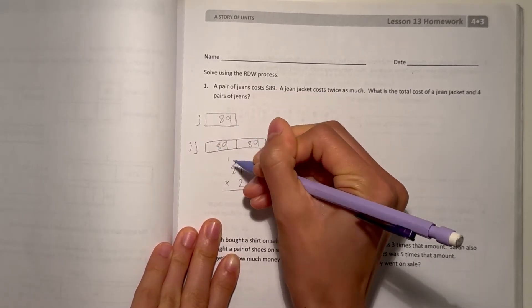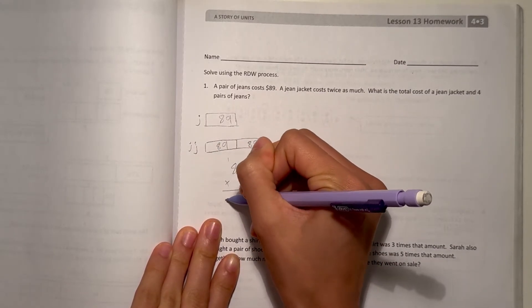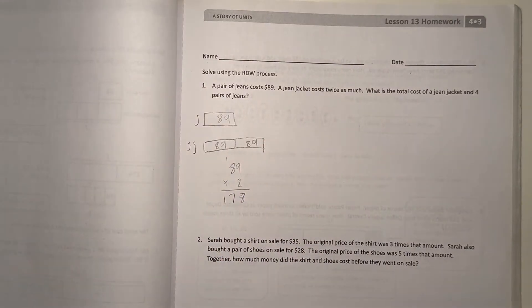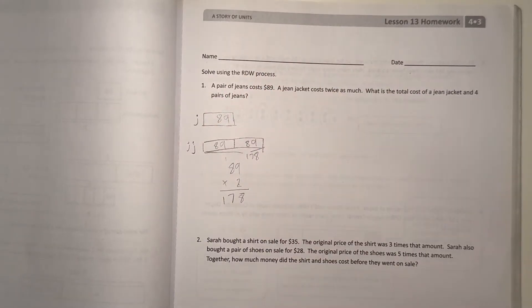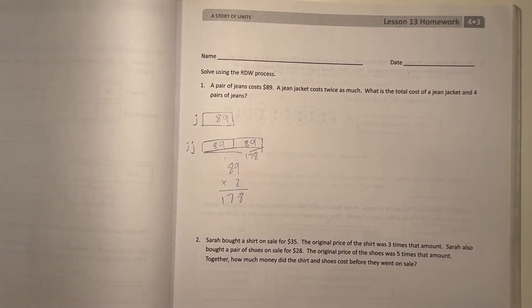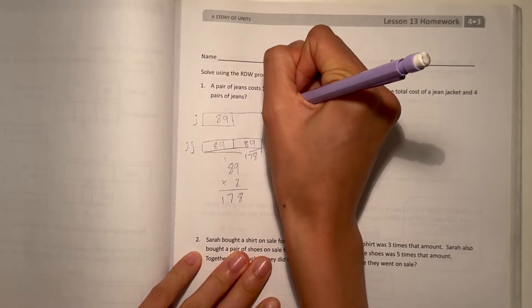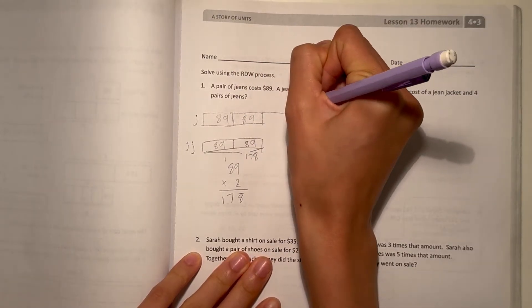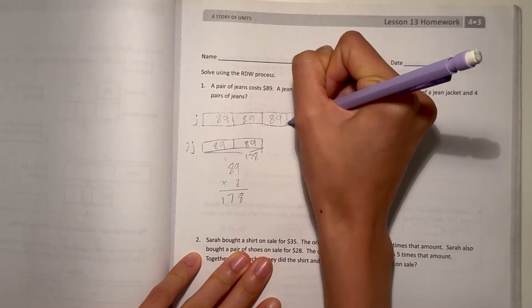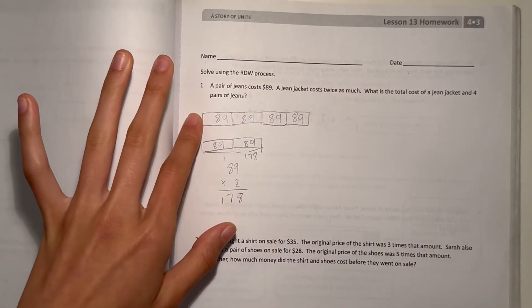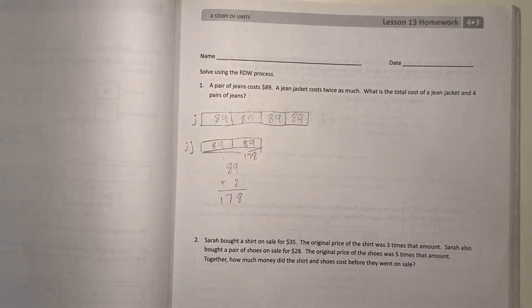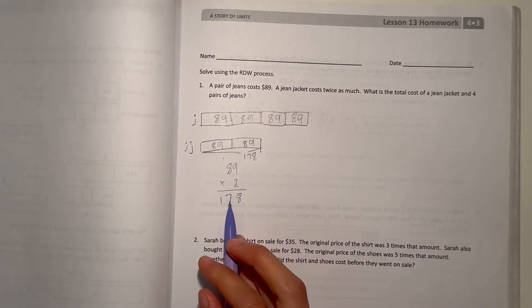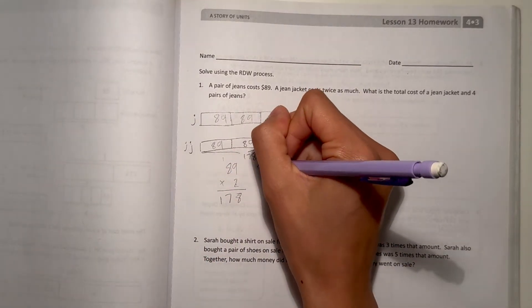So a jean jacket is twice as much as the cost of one pair of jeans. So that's 89 times 2. 9 times 2 is 18. 8 times 2 is 16 plus 1 is 17. So 89 times 2 is 178. So that much is 178. Now let's add on to our diagram.